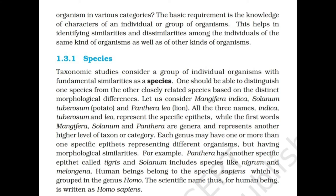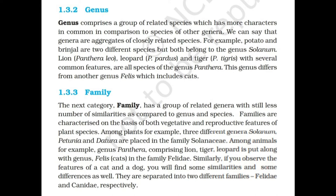The names indica, tuberosum, and leo represent the specific epithets, where the first words Mangifera, Solanum, and Panthera are genera, representing another higher level of taxon or category. Each genus may have one or more specific epithets representing different organisms but having morphological similarities. For example, Panthera has another specific epithet tigris, and Solanum includes species like nigrum and melongena. Human beings belong to the species sapiens, grouped in genus Homo — the scientific name is Homo sapiens.